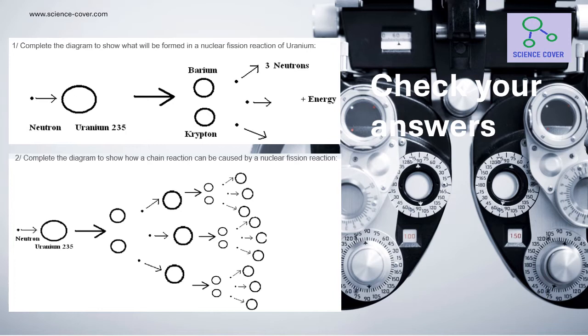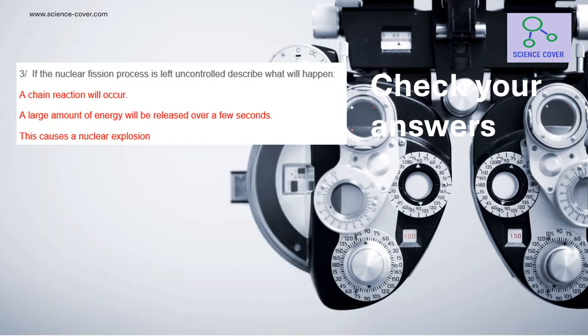Complete the diagram to show how a chain reaction can be caused by a nuclear fission reaction. Take the neutrons released from the nuclear fission and use them to incite nuclear fission in another uranium atom. If the nuclear fission process is left uncontrolled, a chain reaction will occur, a large amount of energy will be released over a few seconds, and we will witness a nuclear explosion.